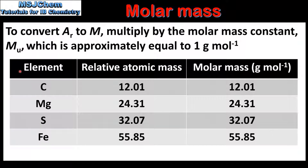In this table we have the elements we saw in the previous slide, their relative atomic masses and their molar masses. Carbon has a relative atomic mass of 12.01, so its molar mass is 12.01 grams per mole. Magnesium has a relative atomic mass of 24.31 and a molar mass of 24.31 grams per mole. Sulfur has a relative atomic mass of 32.07 and a molar mass of 32.07 grams per mole. Iron has a relative atomic mass of 55.85 and a molar mass of 55.85 grams per mole.